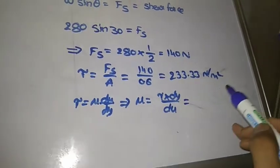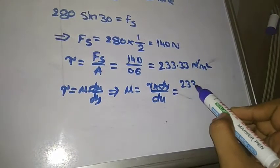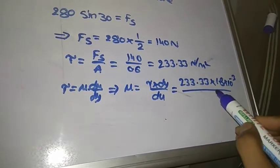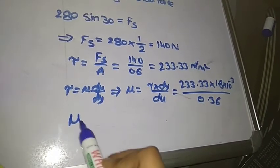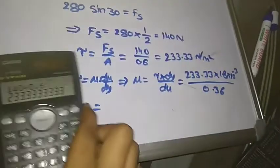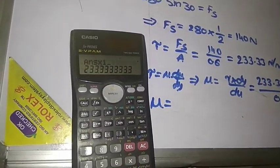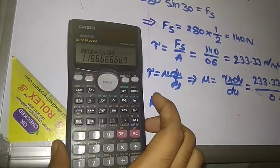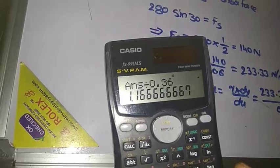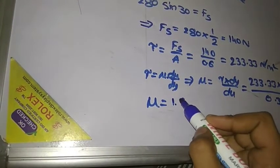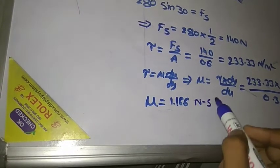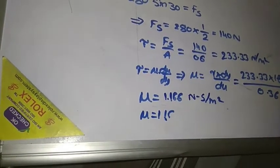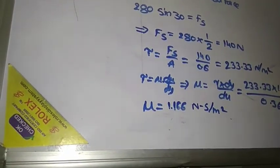Here τ = 233.33, dy = 1.8 × 10⁻³, and du = 0.36. So μ = 233.33 × 1.8 × 10⁻³ / 0.36 = 1.166 N·s/m². Or μ = 11.66 poise.